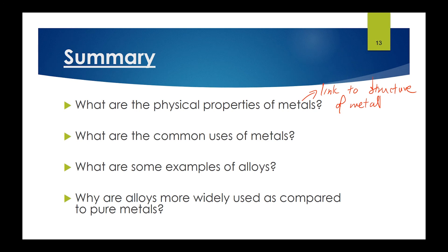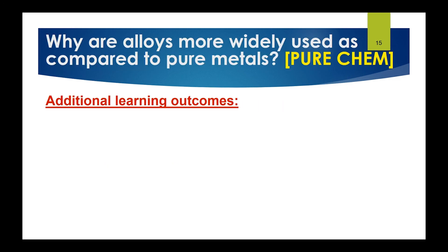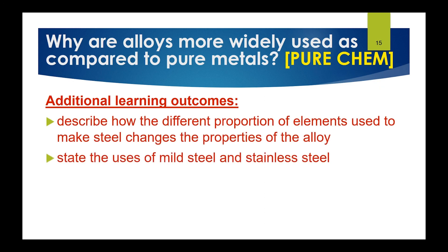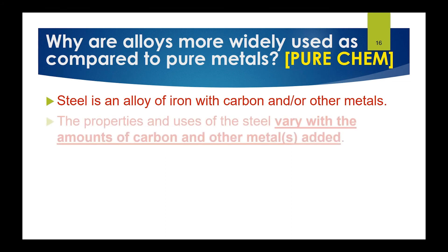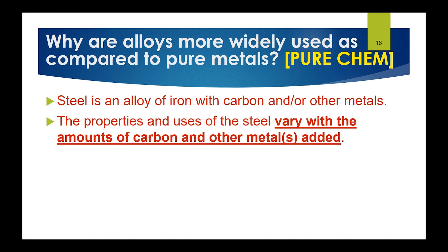For pure chemistry students, there are two more learning objectives: first, how different proportions of elements used to make steel change the properties of the steel; and second, the common uses of mild steel and stainless steel. These objectives elaborate specifically on the alloy of steel. Steel is an alloy of iron with carbon and other elements.